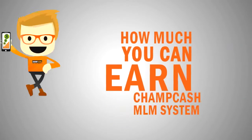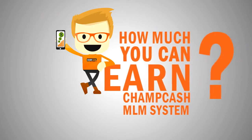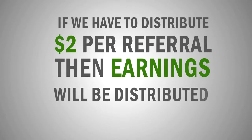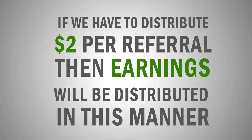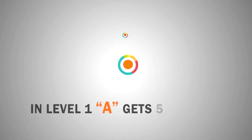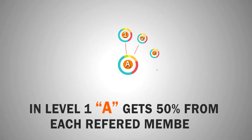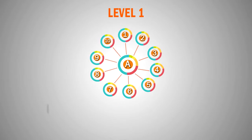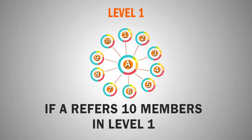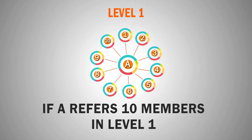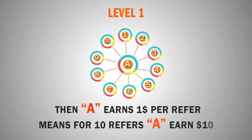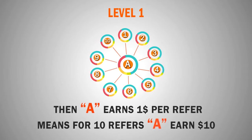Let's know how much you can earn from our MLM system. Suppose we distribute $2 per successful referral. At level 1, for direct referrals, A will get 50% commission. If A refers 10 friends at his level 1 successfully, then A will get $1 from each referral, so you will earn $10 at level 1.